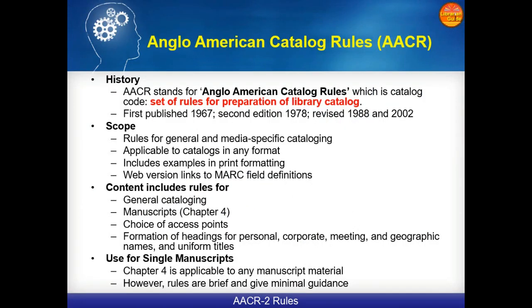We have already discussed in the previous video about the Anglo-American Cataloging Rules, that is the AACR, which was first published in 1967. The second edition came into existence in 1978. After that, the revised edition was published in 1988, then 2002, and so on. It includes rules for general and media-specific cataloging, applicable to cataloging in any kind of format, including print formatting, the web version, and links to MARC field definitions.